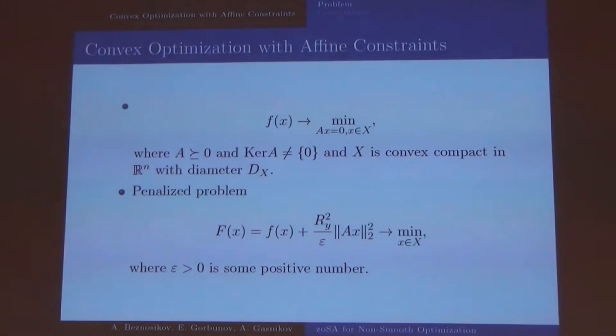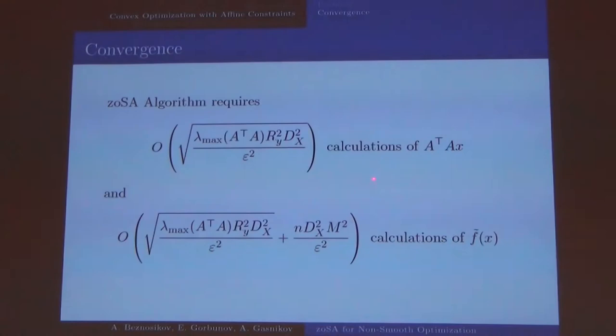Let's talk about convex optimization with affine constraints. We have this problem, we try to minimize function F maybe something very bad but with constraint X is equal to 0 and we can rewrite this one to penalized problem like this. In this problem we have function F and function G in this way and we can use our methods to compute the gradient of this one and the stochastic gradient of F and we have convergence like this to oracle calls of G and oracle calls of F.